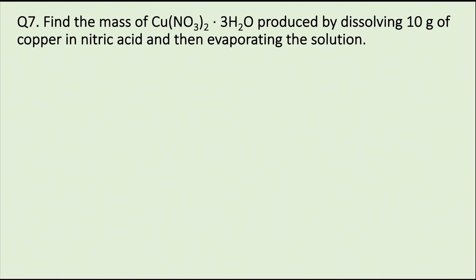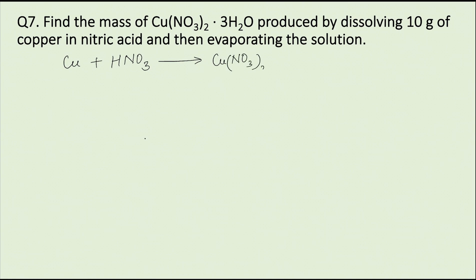The equation for the formation of copper nitrate trihydrate is: copper plus nitric acid forming Cu(NO3)2·3H2O.